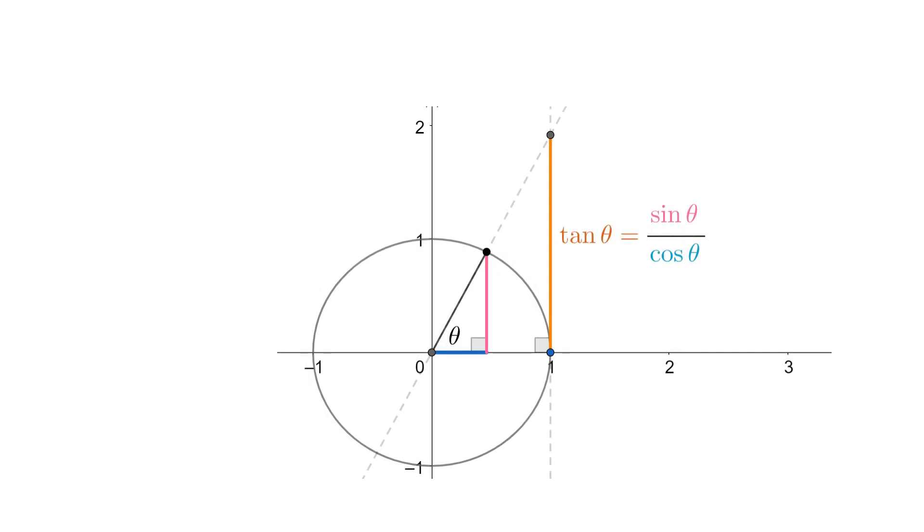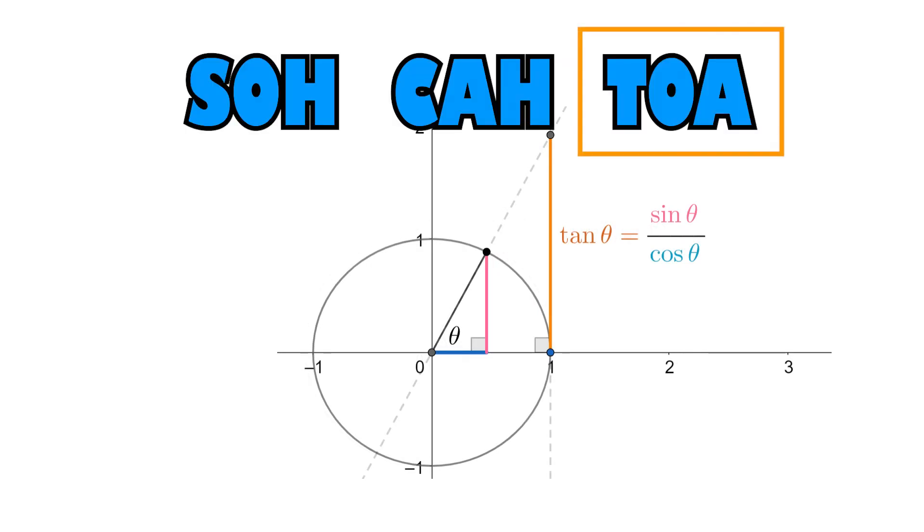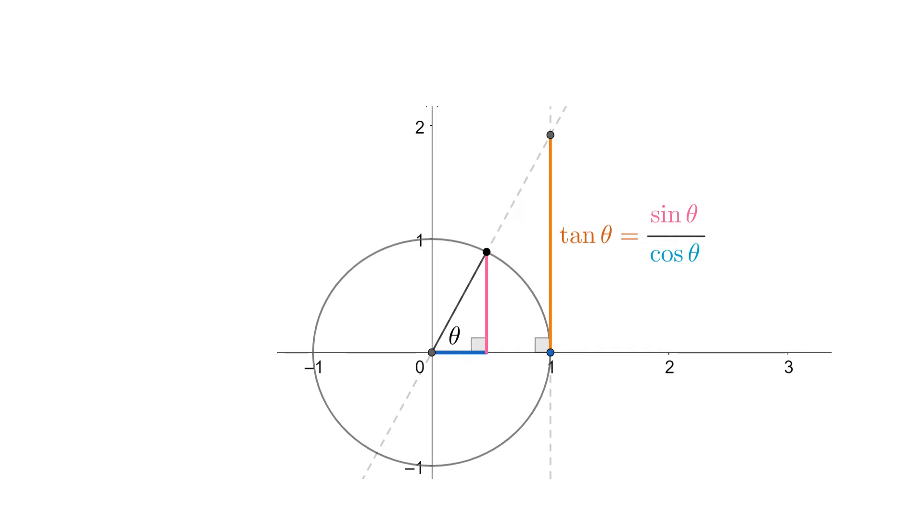Tan is a little trickier, but because tan is opposite over adjacent, it's equal to sine divided by cosine. You can use similar triangles to show that the tangent length is given by this line segment on the right-hand tangent of the unit circle. But I think it's easier to just remember that tan equals sine over cosine.